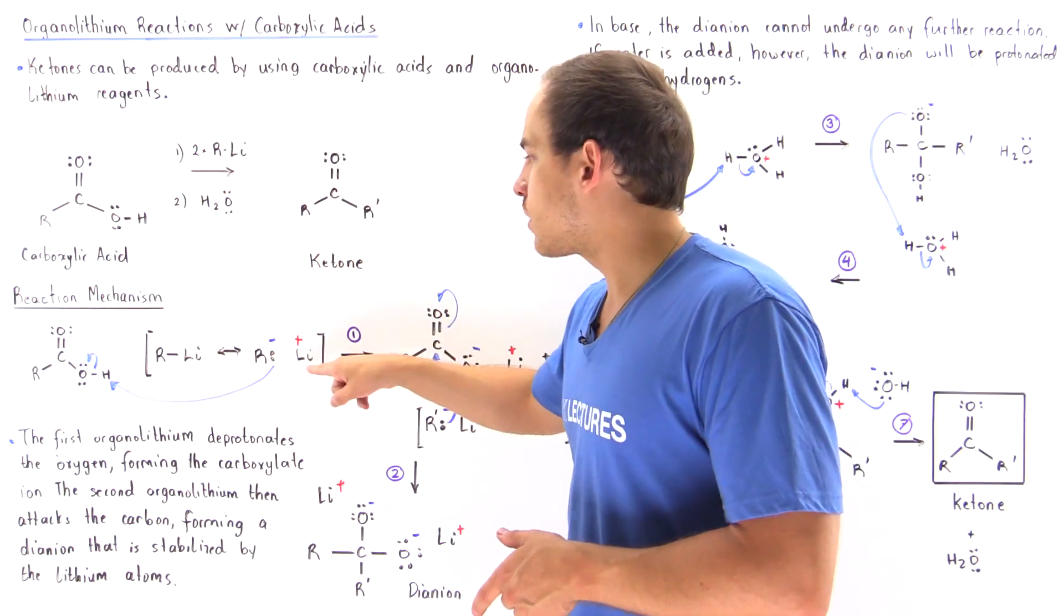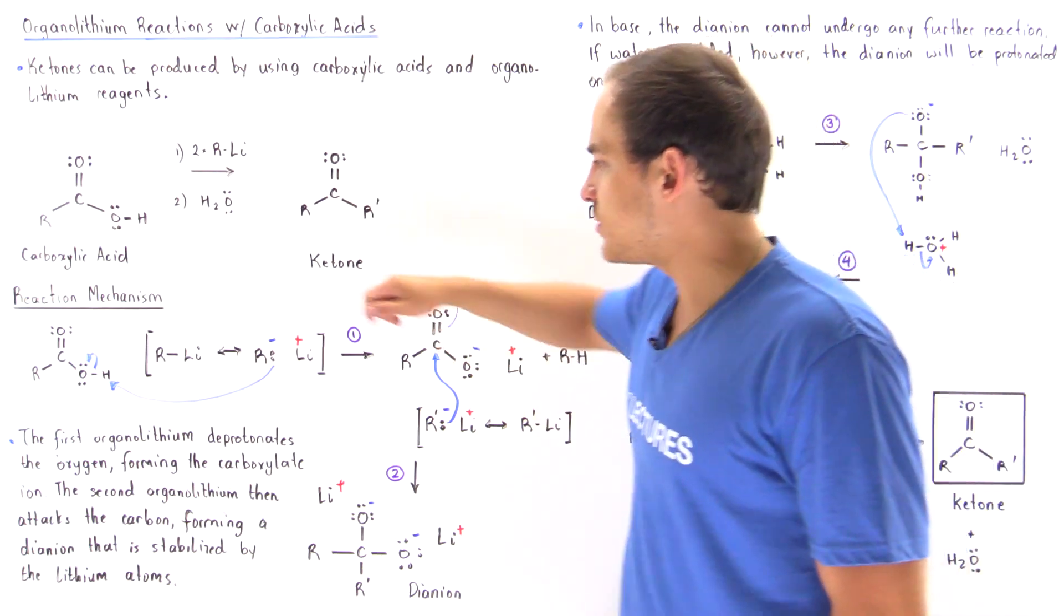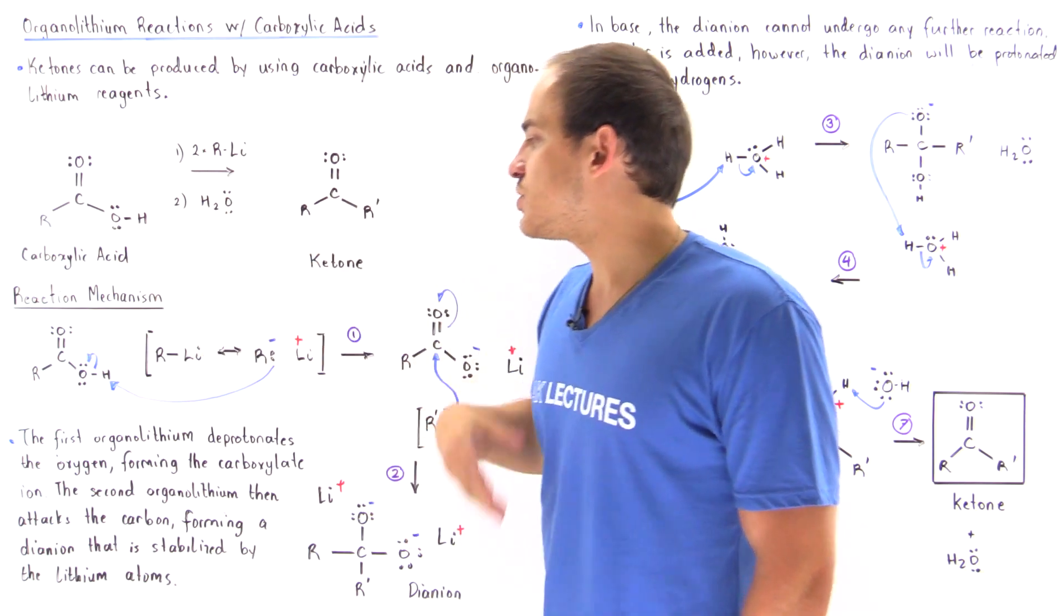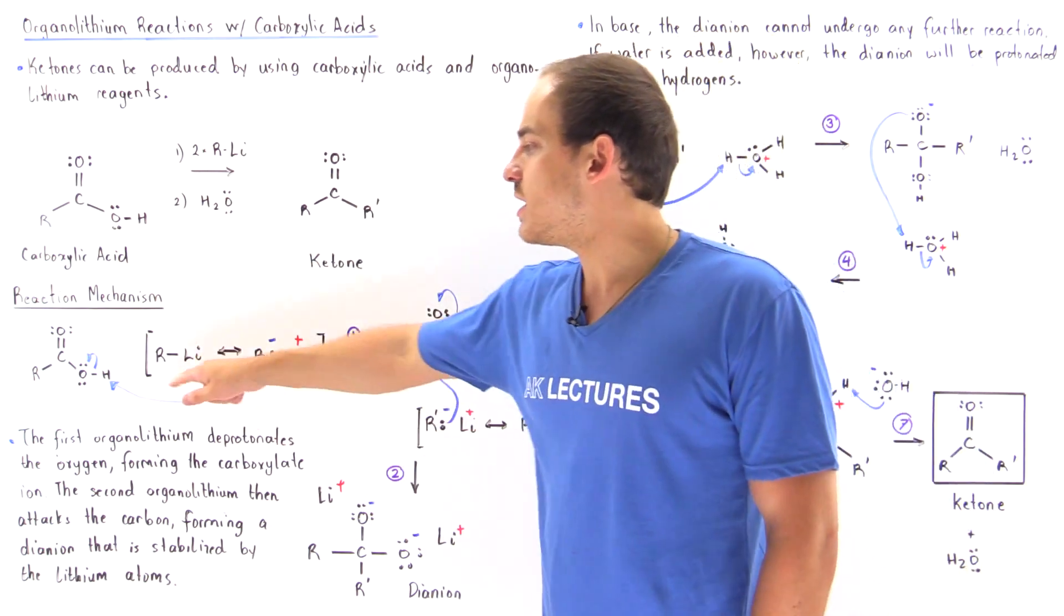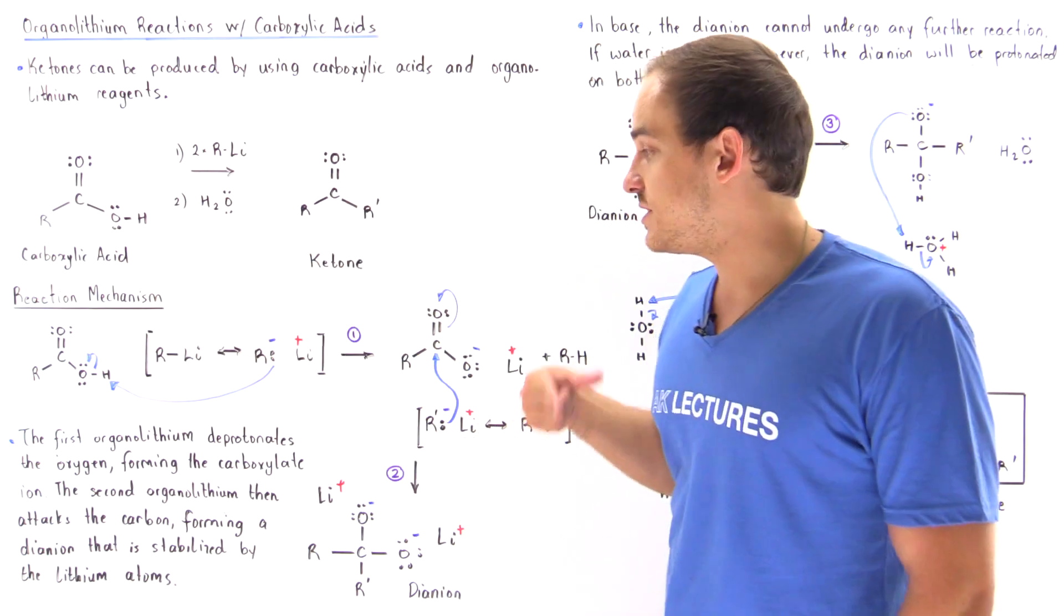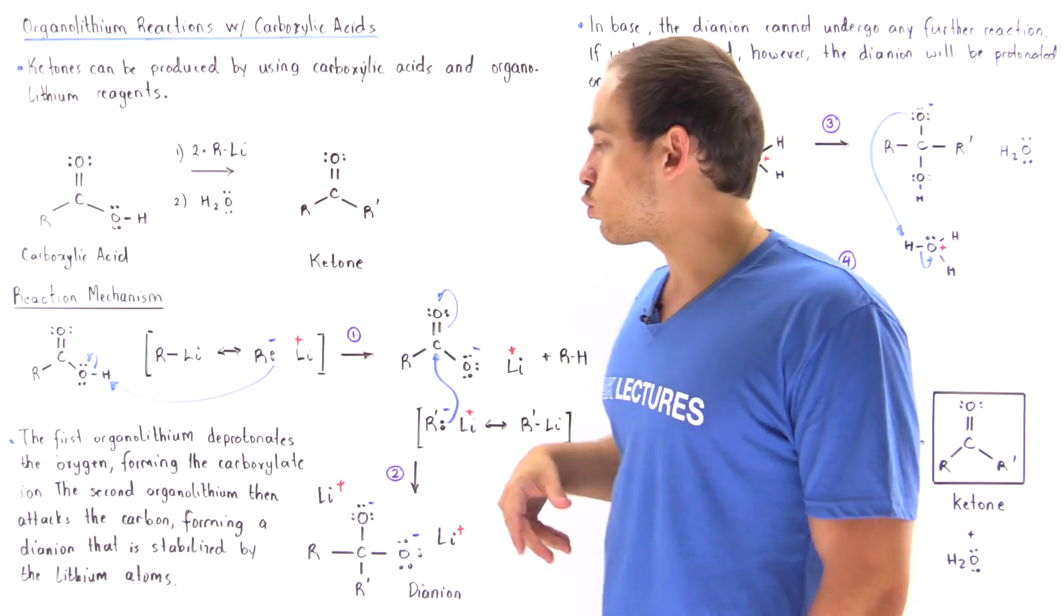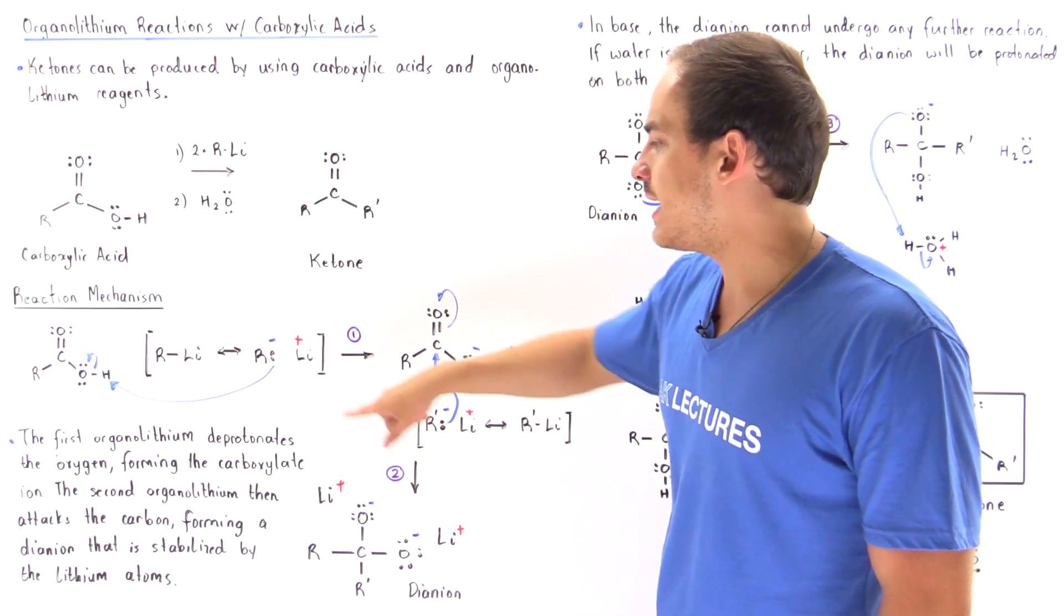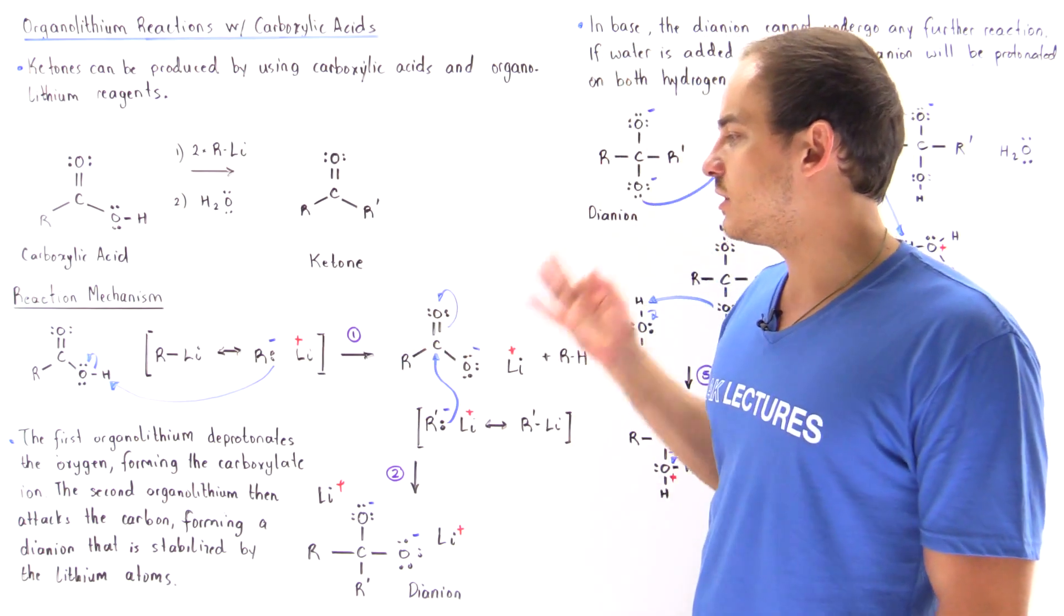This is our organolithium reagent in which the R is attached to the lithium atom. Because lithium is much less electronegative than the carbon of the R group, we see that on one of the resonance stabilized forms, we have a full negative charge on the R and a full positive charge on the lithium.